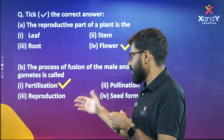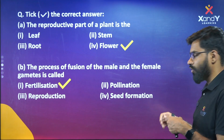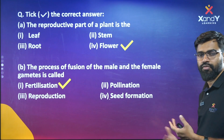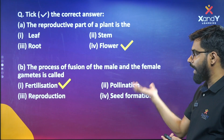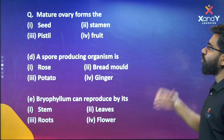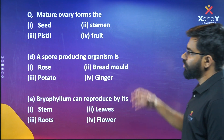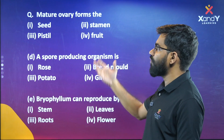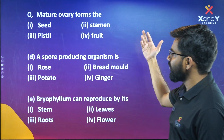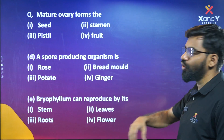What is seed formation? The mature ovary forms — options are: seed, stamen, pistil, fruit. We are talking about post-fertilization events. The mature ovary forms the fruit.